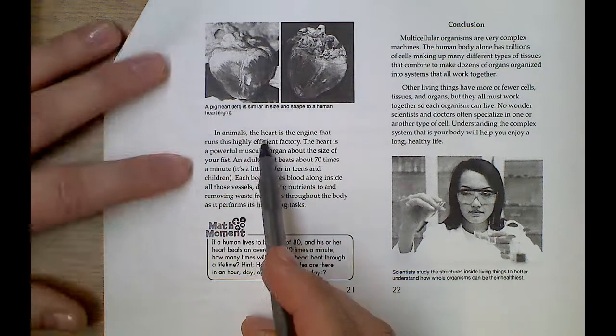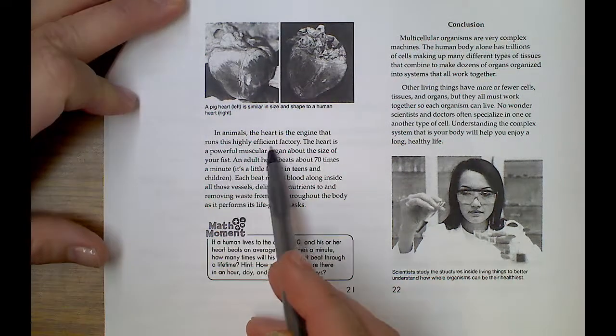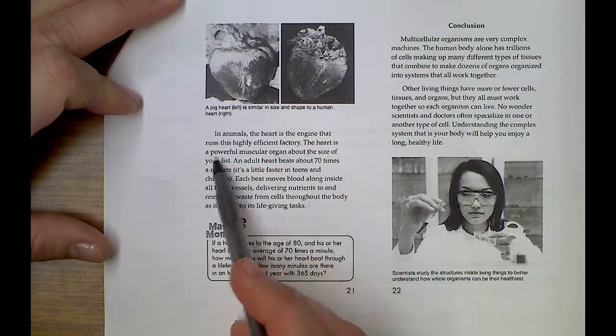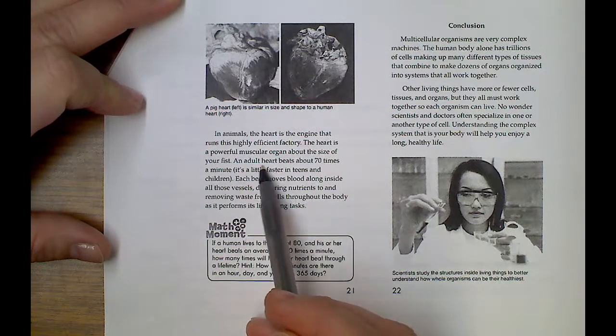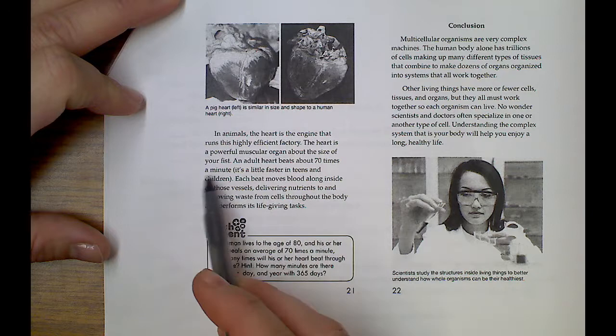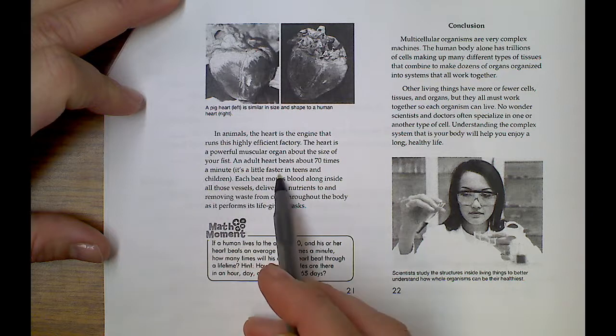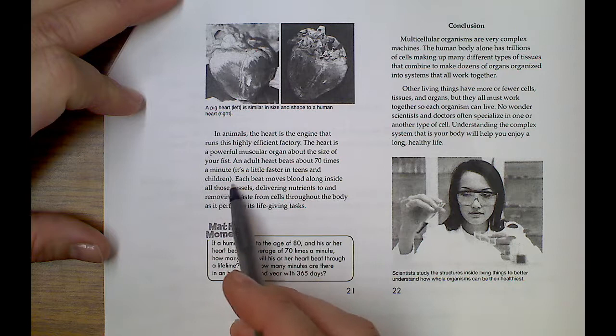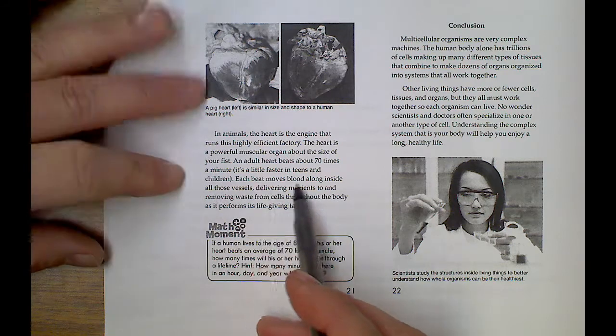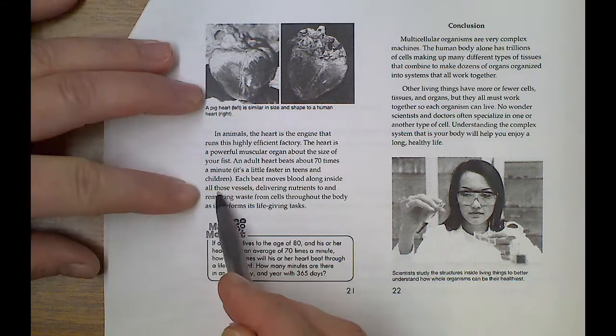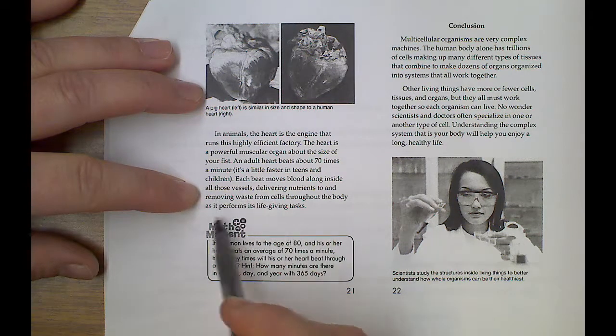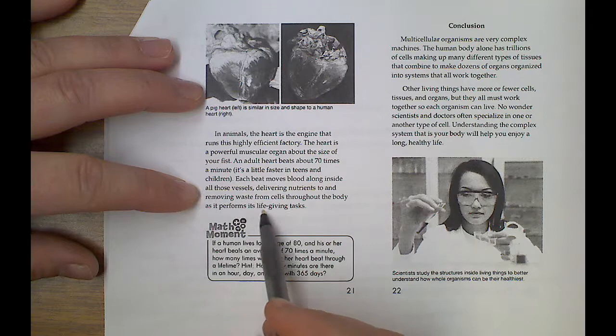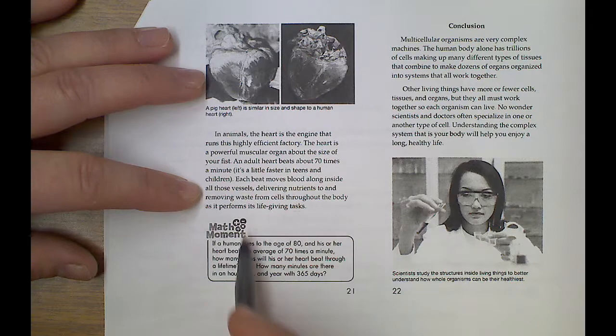In animals, the heart is an engine that runs the highly efficient factory. The heart is a powerful muscular organ that is about the size of your fist. An adult heart beats about 70 times a minute. It's a little faster in teens and children. Each beat moves blood alongside all those vessels, delivering nutrients and removing waste from cells throughout the body as it performs a life-giving task.